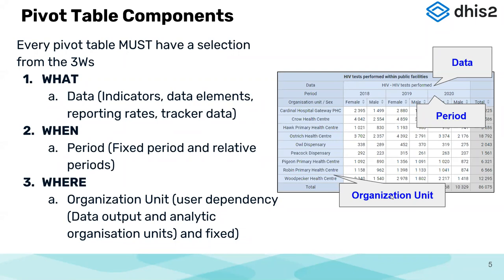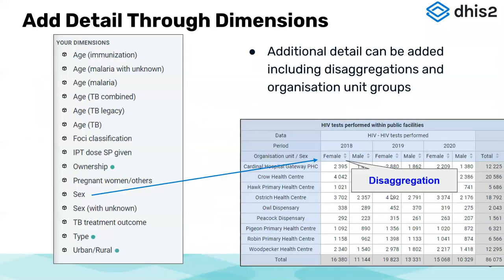Apart from the three key dimensions, sometimes you want your data analyzed and presented with more granular information. These can be typed as further dimensions and are used to break down the information you have already retrieved. Taking the example of the HIV tests performed pivot table — the female and male breakdown is coming from further dimensions captured under the sex dimension. These are more or less disaggregations to further break down the already analyzed information.